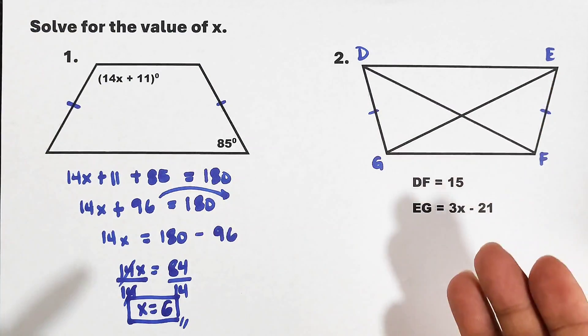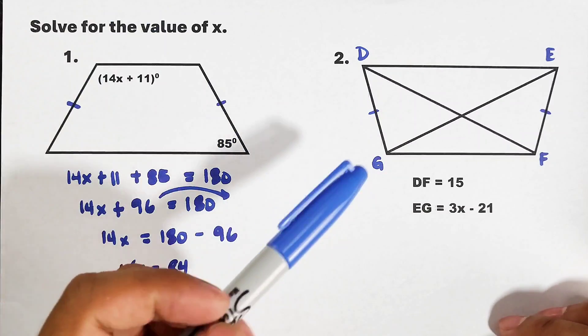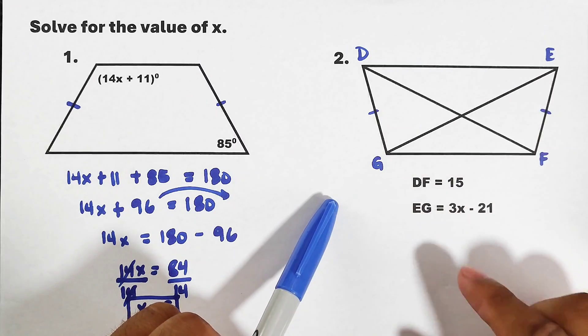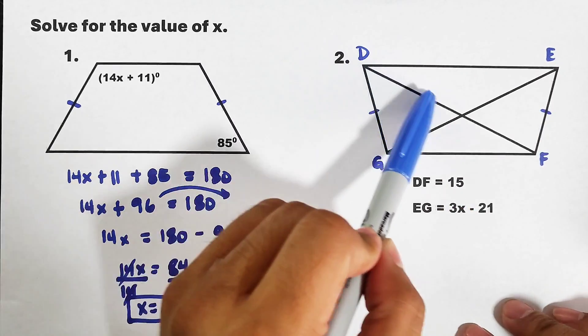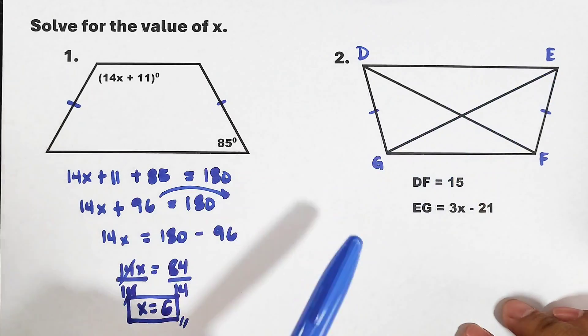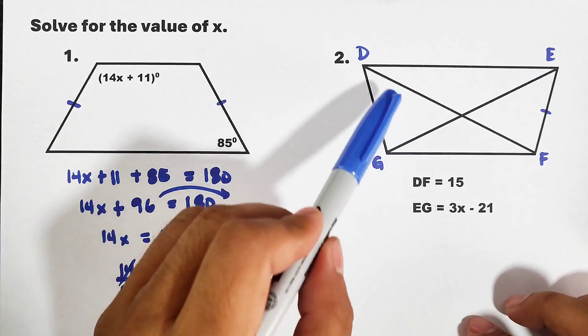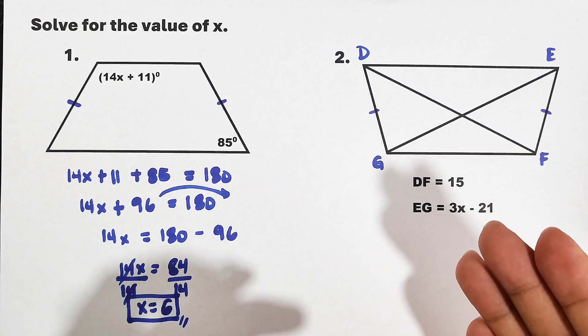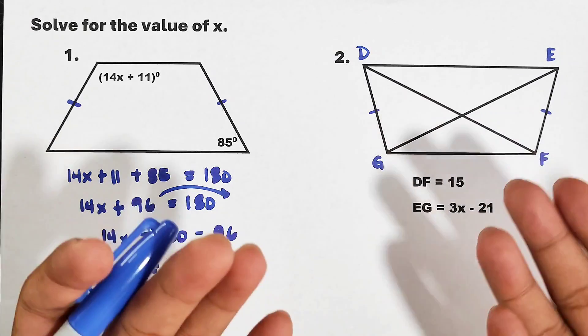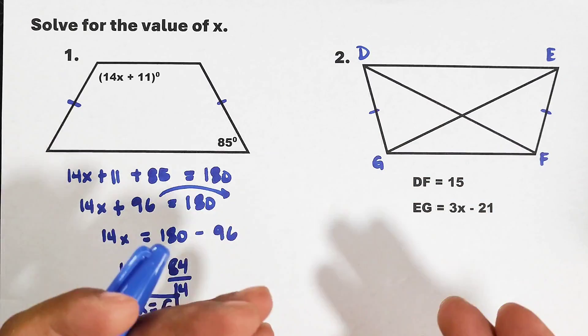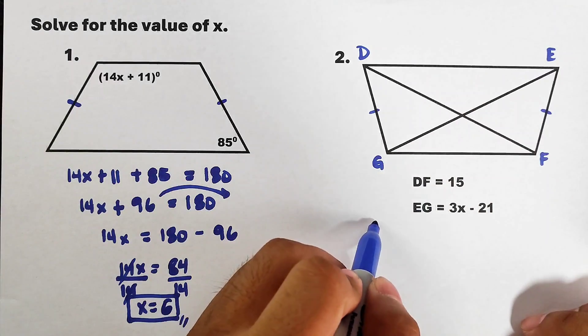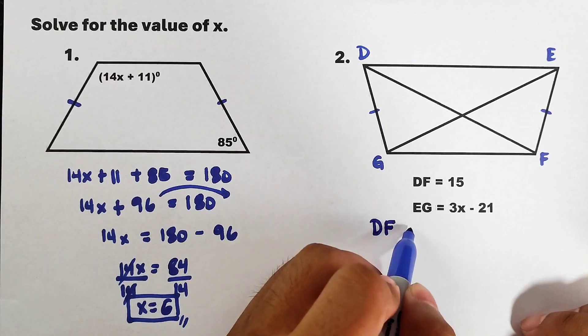Now let's go with the other example. We have here trapezoid DEFG. So what we have here is DF, which is 15, so this is DF equals 15. And then your EG is 3x minus 21. These two segments inside the trapezoid are the diagonals. So how are we going to solve for this? We know that in an isosceles trapezoid, the diagonals are congruent, or it simply means they are equal. So we could say that DF is equal to EG.